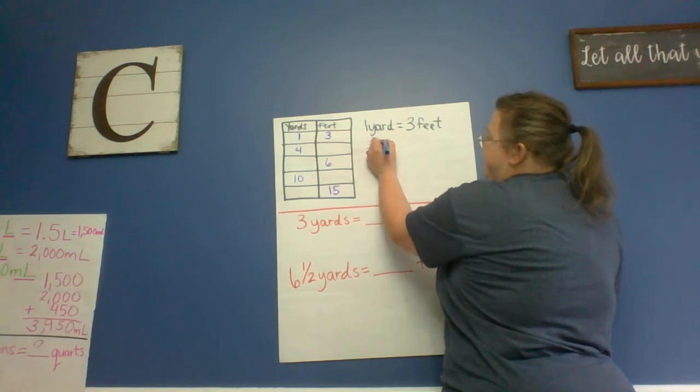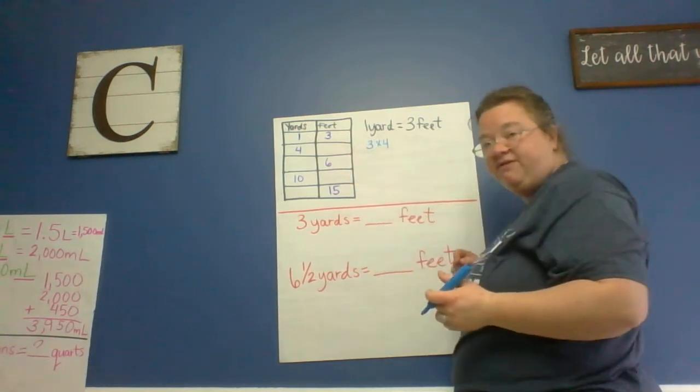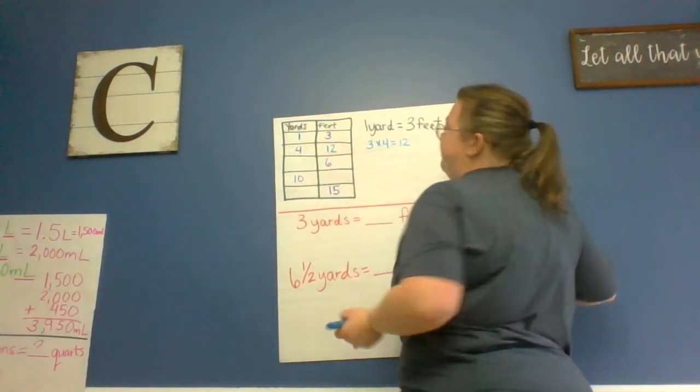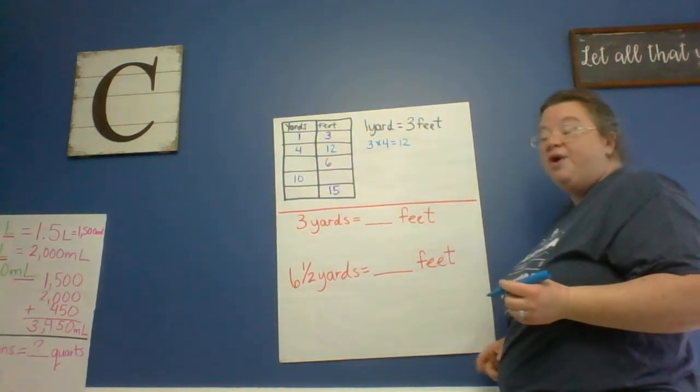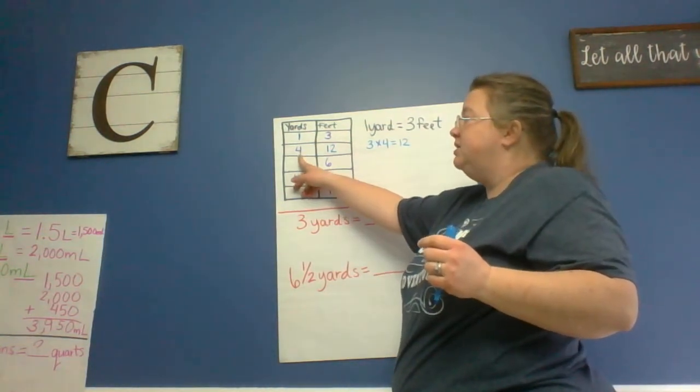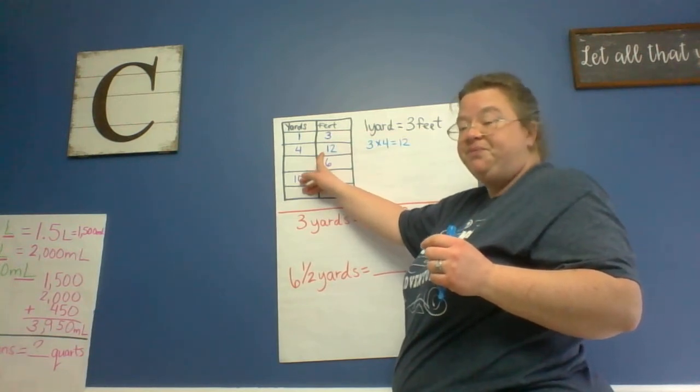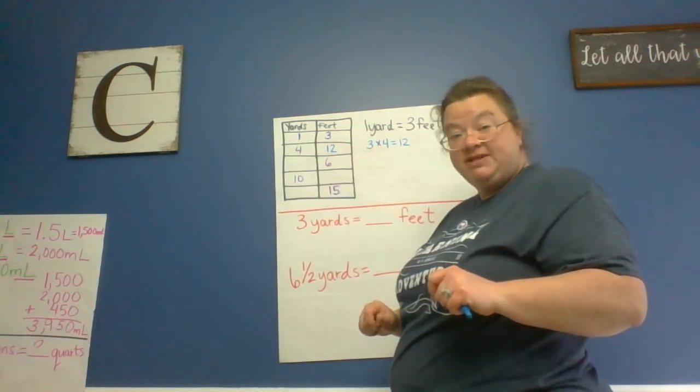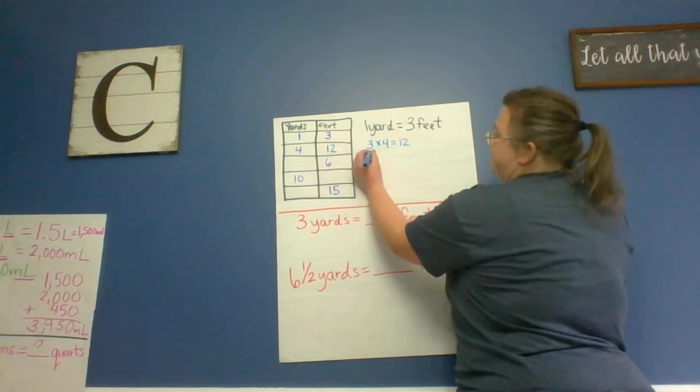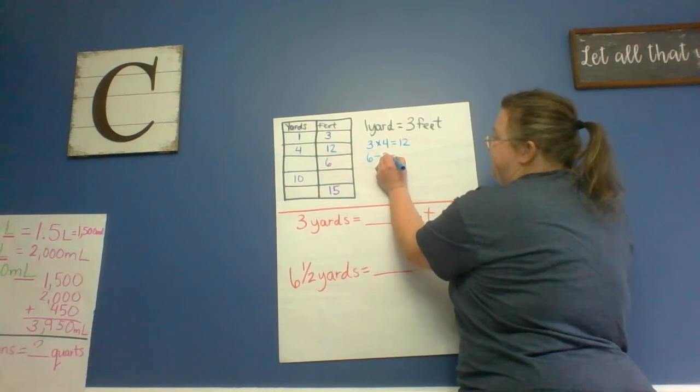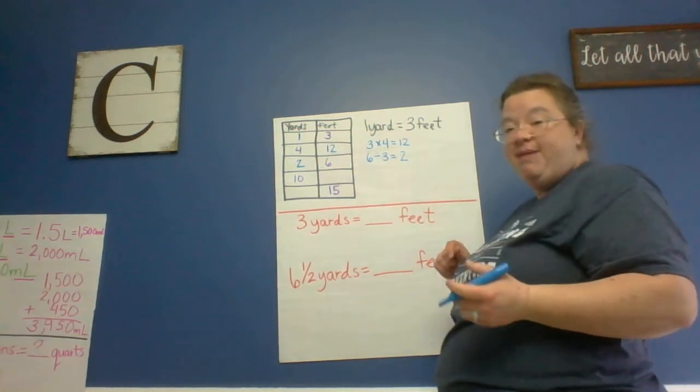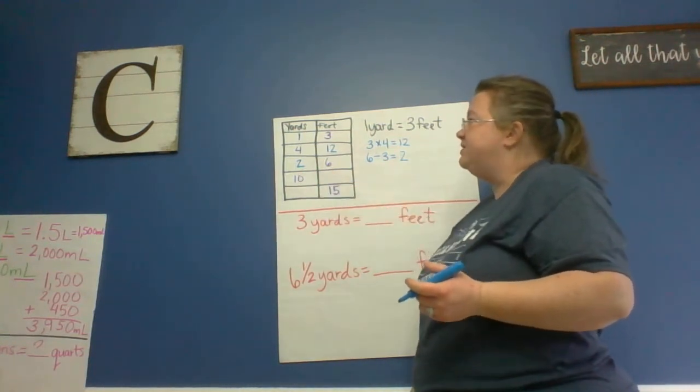So there are 12 feet in one yard. Now notice I multiplied the yards by three to get the feet. So now my yard is missing. So I'm going to have to go from feet to yard. So I'm going to have to do the opposite of that. So if I have six feet, I'm going to divide that by three to get two. So if I have two yards, it's the same as six feet, because two times three equals six.